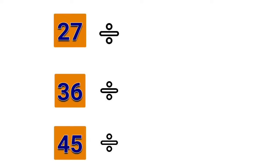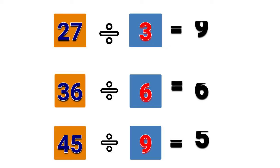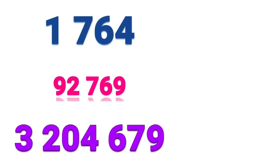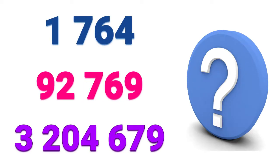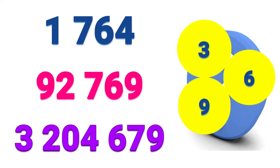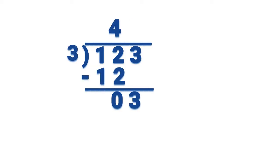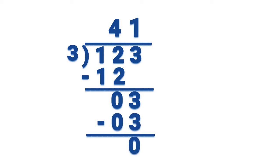It is very easy to determine if numbers like 27, 36, and 45 are divisible by 3, 6, or 9 respectively, because they are small numbers. But if numbers have 3 or more digits, it becomes more difficult to know if they are divisible by 3, 6, or 9. Many of us do long division to find our answer, but there is a simpler way — we just have to follow divisibility rules.